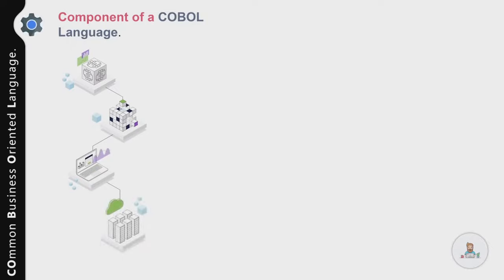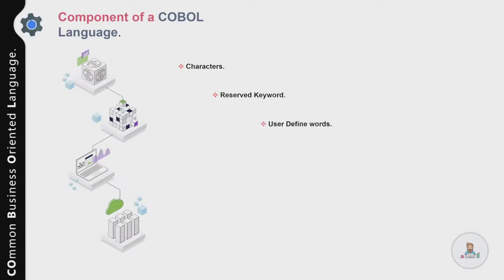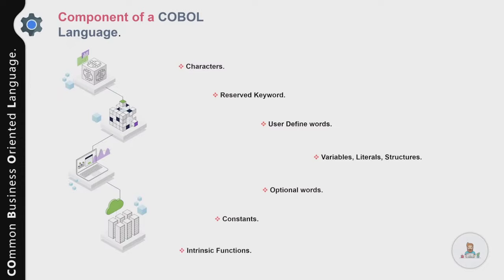Now let's talk about the various components of a COBOL programming language. One of the design goals of COBOL was to assist readability by making the language as English-like as possible. The structure of COBOL is divided into different components which you use to create your program logic. These components are: characters, reserved keywords, user-defined words, variables, literals, and structures.